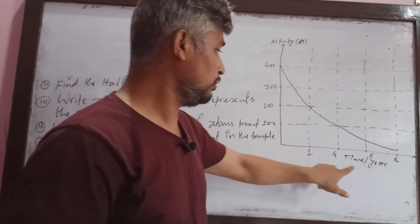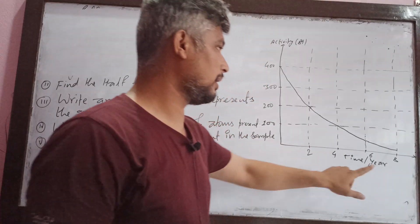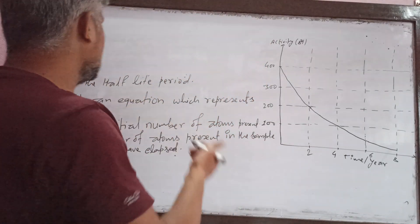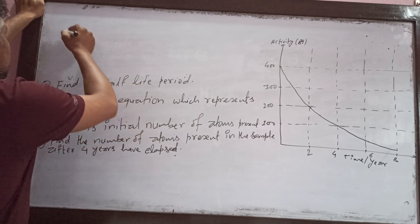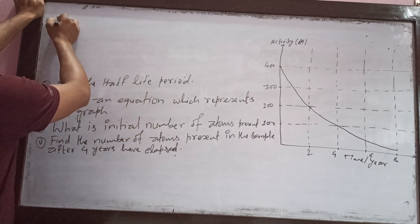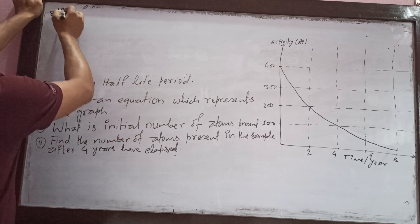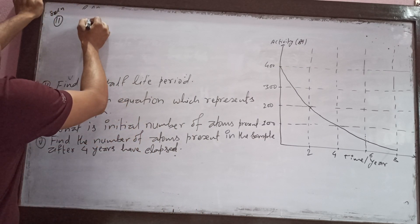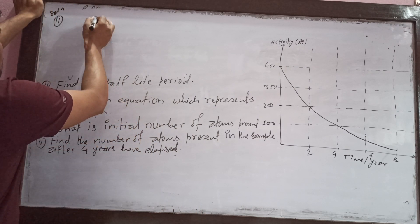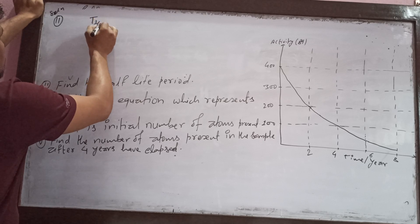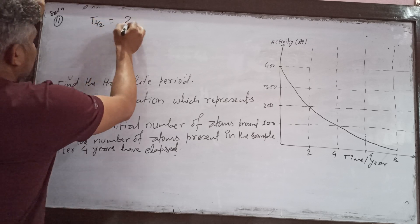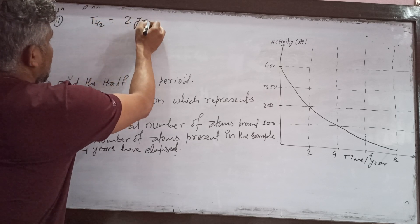At 200 Becquerel, the corresponding time is 2 years. So, T-half is equal to 2 years.